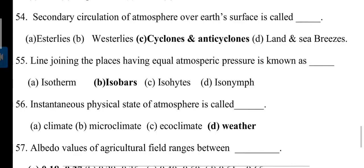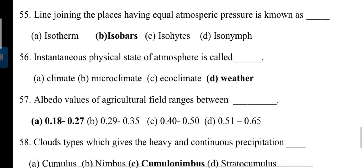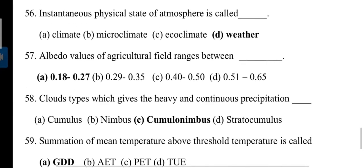Lines joining places having equal atmospheric pressure are known as isobars. Isotherms are imaginary lines connecting points of equal temperature. Instantaneous physical state of atmosphere is called weather.